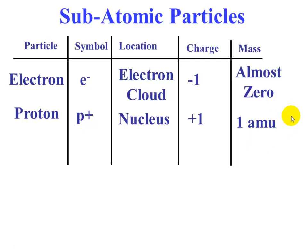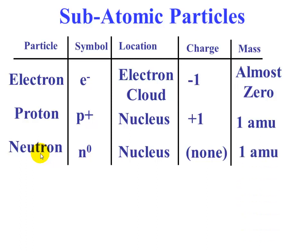The last subatomic particle is the neutron. The neutron symbol is n⁰. The location of the neutron is also in the nucleus, so in the nucleus we find both the proton and the neutron. The charge of a neutron is zero—there is no charge, it is neutral, hence it's called a neutron. The mass is very close to that of a proton, so we say it is also 1 amu.